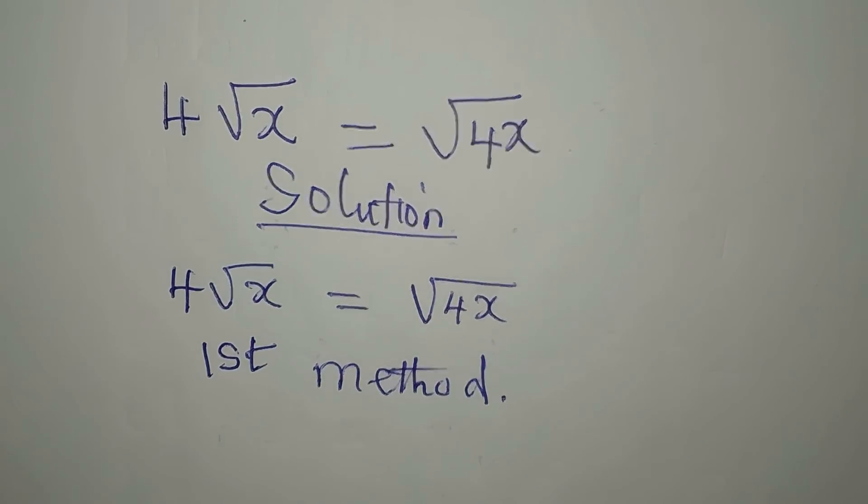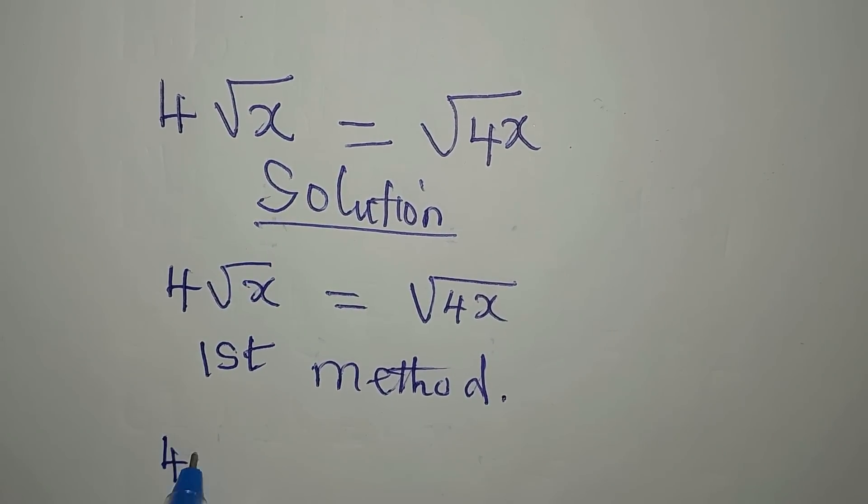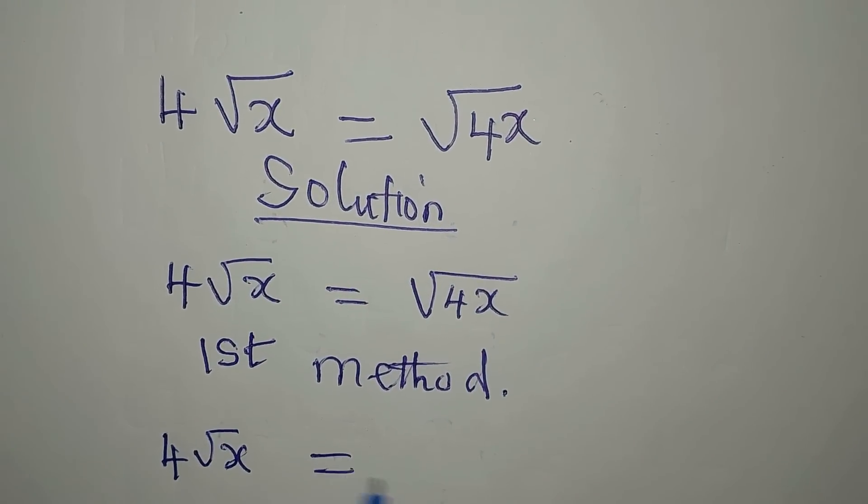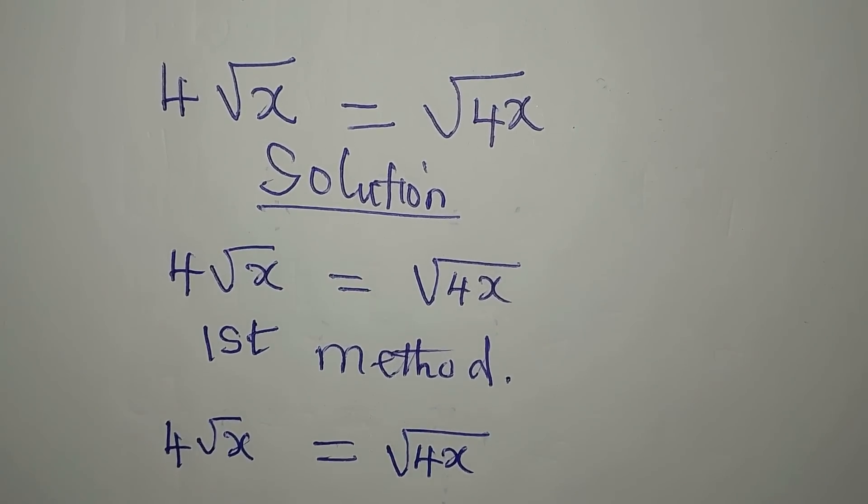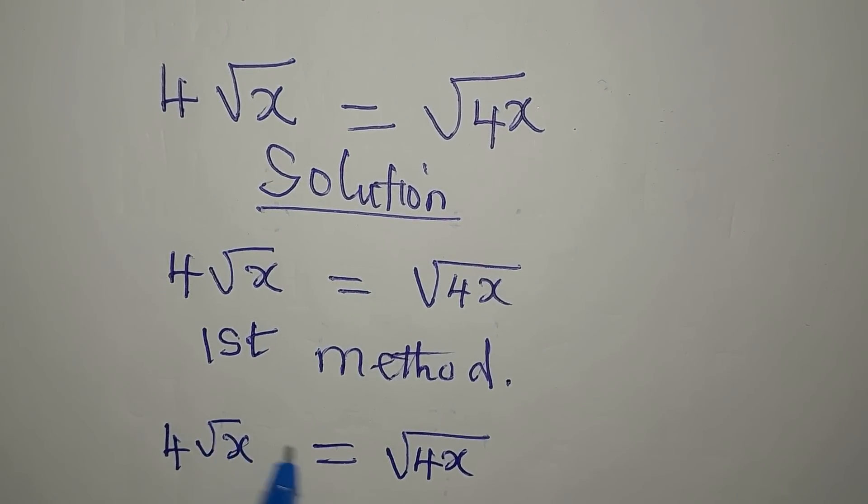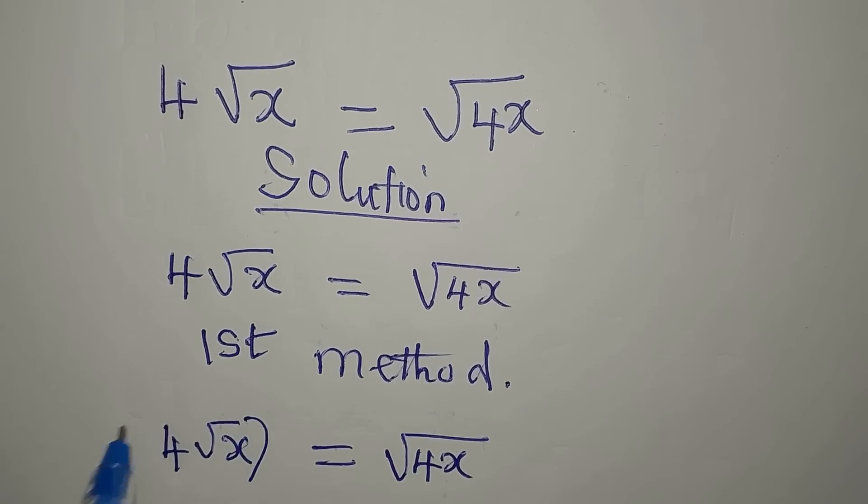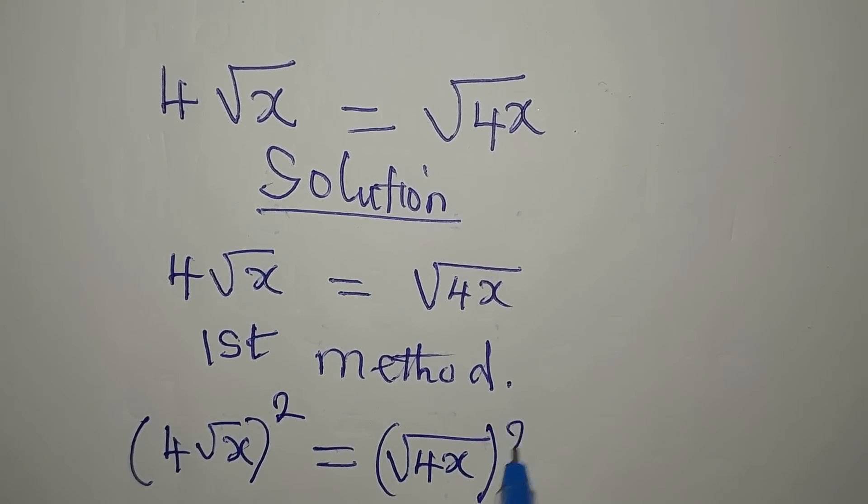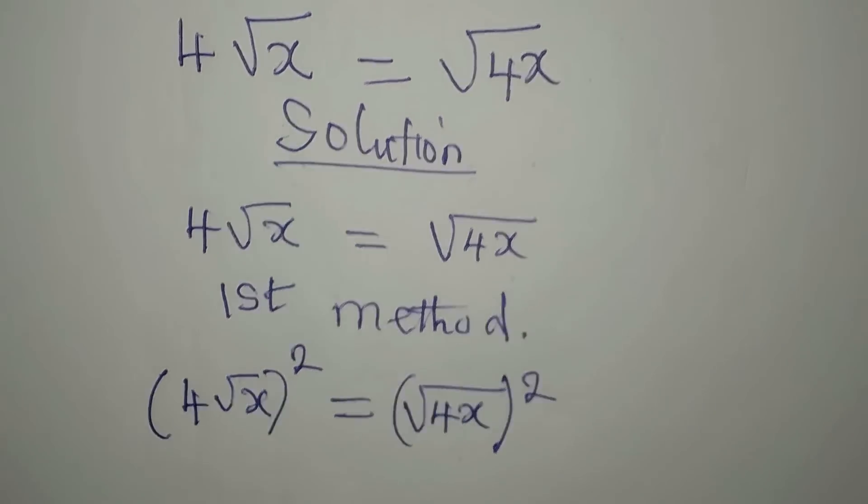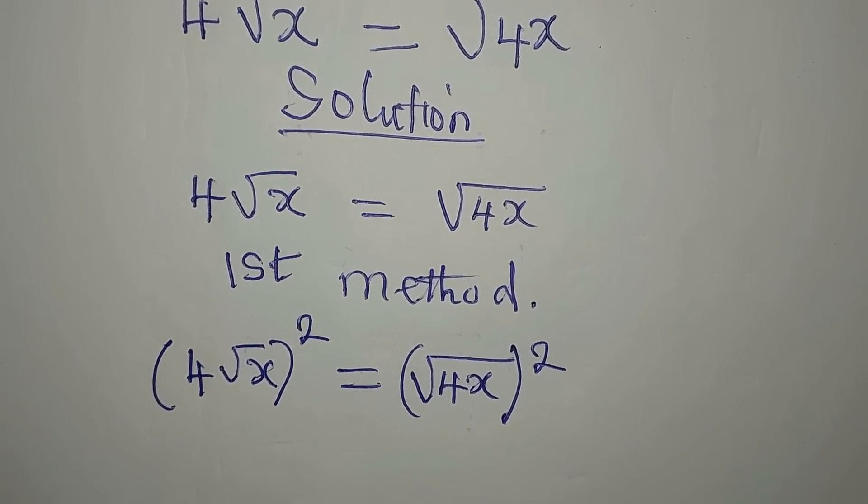The first method, we have 4 root x equals root 4x. Our first step is to remove the square root and the only way we do that is to square it. Then this also will be squared. Because if you square both sides of an equation, you have not changed the equation.